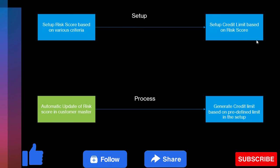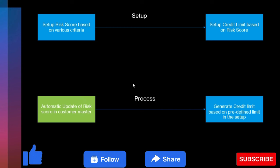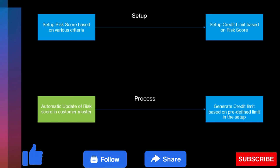Once the risk score setup is done in the system, we have a batch job which runs and updates the risk score in the customer master. We have created the risk score and credit limit based on the risk score in the backend. The system will always update the risk score in the customer master. Then periodically — weekly or monthly — whenever the credit limit needs to be revised, the organization doesn't need to create credit limits manually. They will just generate credit limits, and based on the setup and risk score, the credit limit will be generated automatically.